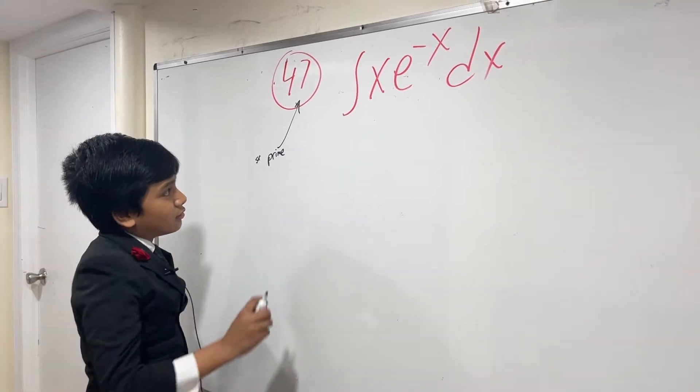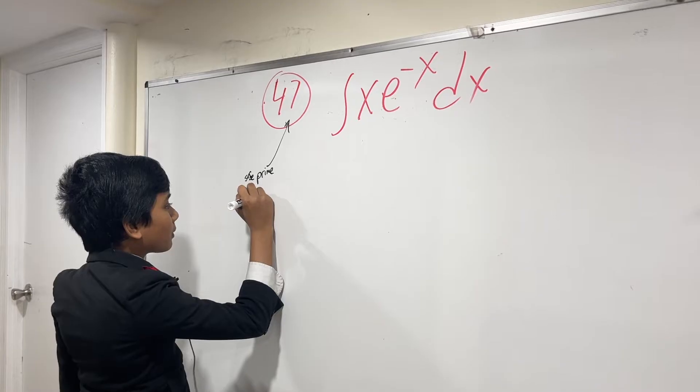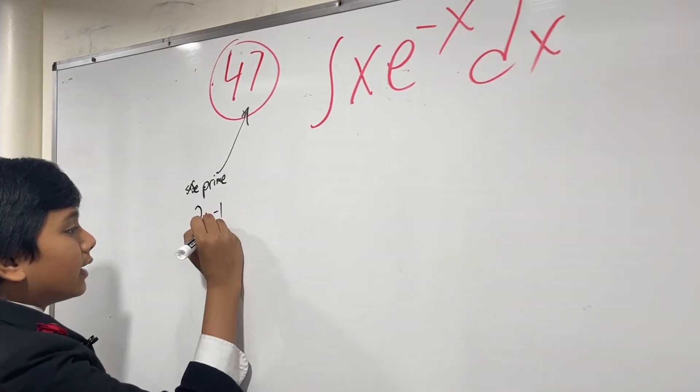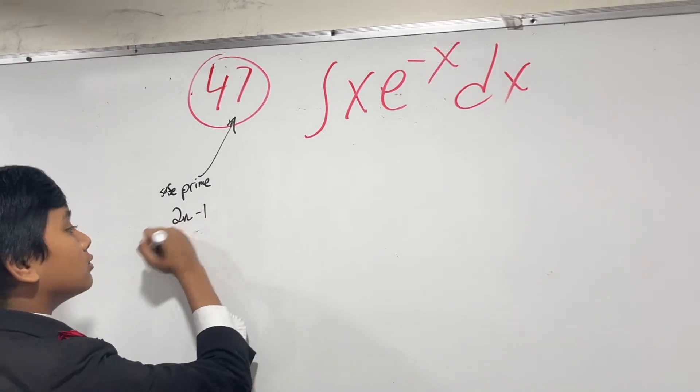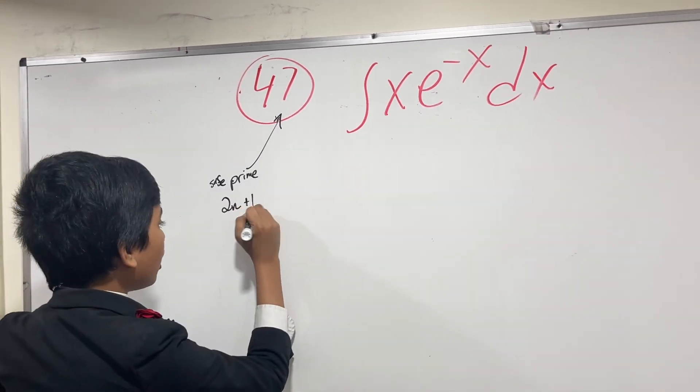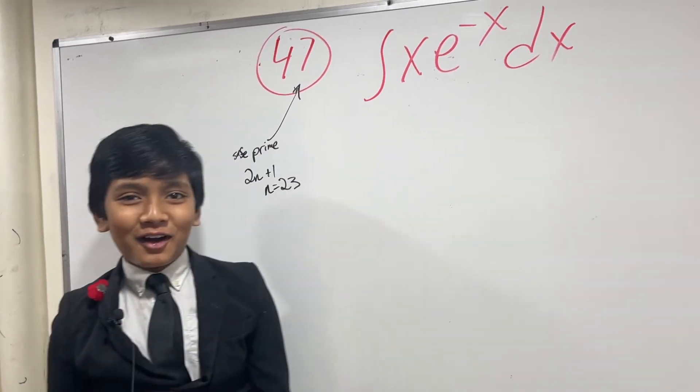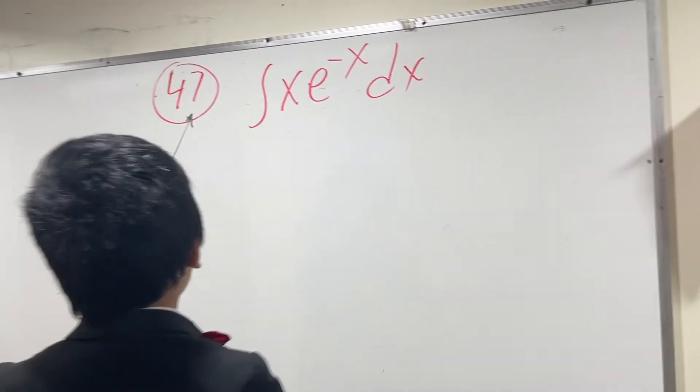By the way, this is a safe prime because it comes in the form 2n+1 where n is also prime. We talked about 23 being a Sophie Germain prime earlier, so that's what that means.